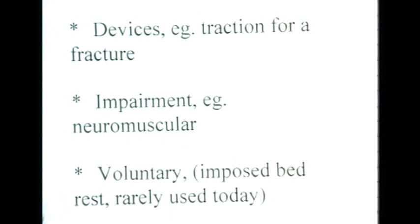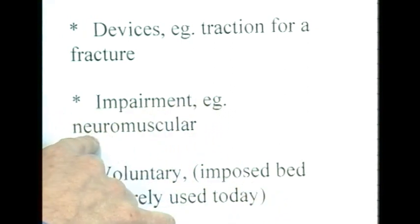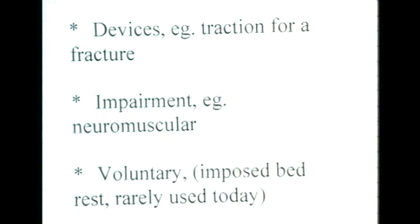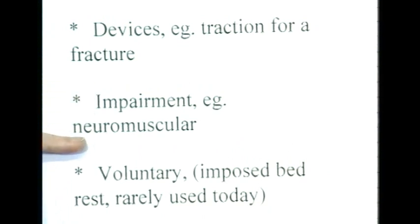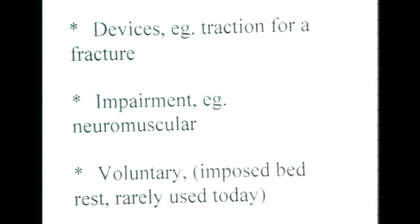Another cause of immobility is impairment of neuromuscular function. Whenever the nervous system or the muscles are not working properly, there's going to be immobility. For example, if there's spinal trauma and there's a transverse damage to the spinal cord, then no impulses from the top of the spinal cord can get to the bottom, so the lower part of the body can be immobilized. This can also happen in a number of disease processes such as Guillain-Barré syndrome, muscular dystrophy, myasthenia gravis, or motor neuron disease. Many diseases can affect the nervous system and musculature, and therefore movement is not going to be possible.